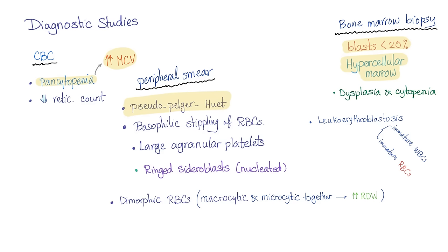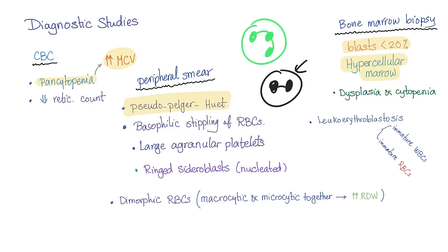On peripheral smear, you will get pseudo-Pelger-Huet anomaly. Normally your neutrophil has a segmented nucleus, but in pseudo-Pelger-Huet, the neutrophil has a bilobed nucleus — two nuclear materials connected with a thin filament of chromatin. They can also be seen after chemotherapy. Basophilic stippling of the red blood cells is also associated with sideroblastic anemia, which is due to lead poisoning.